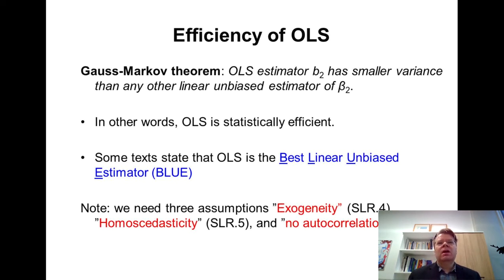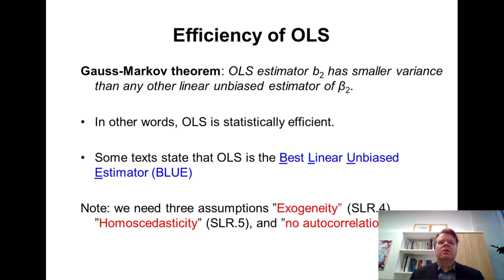This result is largely responsible for the great popularity of the OLS estimator: if we want to estimate a linear regression, it's impossible to find any better estimator than OLS if we require both unbiasedness and minimum variance. This is also why OLS is referred to as the Best Linear Unbiased Estimator, or BLUE. If you're interested in the proof of the Gauss-Markov theorem, it falls beyond the scope of this course, but it's good to know the term and its meaning.